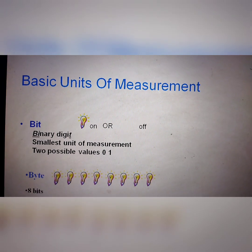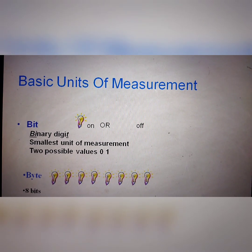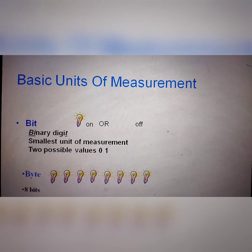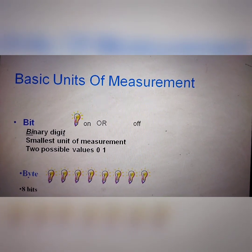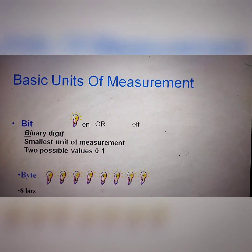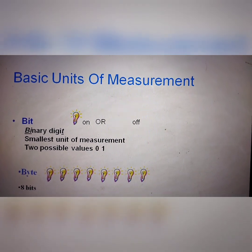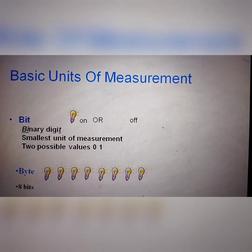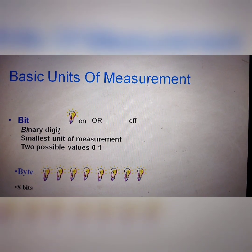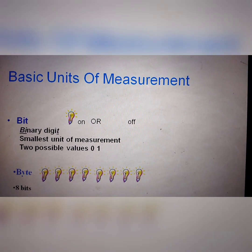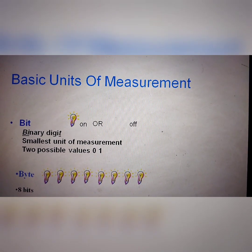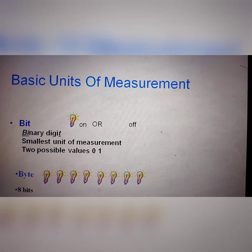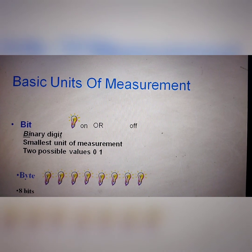Let's see the basic units of measurement. A bit is the smallest unit of measurement and has two possible values: 0 or 1. Then a byte is a total of 8 bits — so 8 bits equal 1 byte.